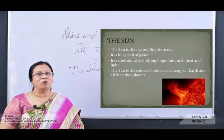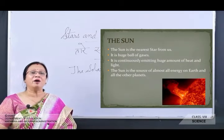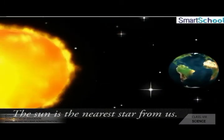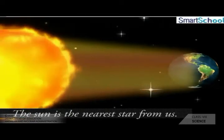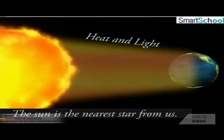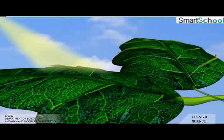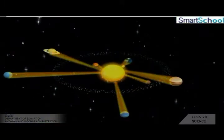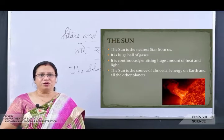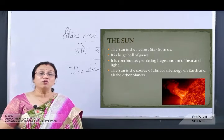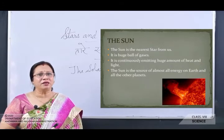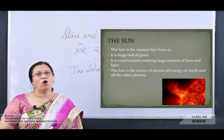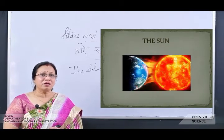Now the next topic is about the sun. The sun is our nearest star. It is a huge ball of gases and continuously emits large amounts of heat and light. The sun is the source of almost all energy on the earth and all the other planets. This picture shows the sun.